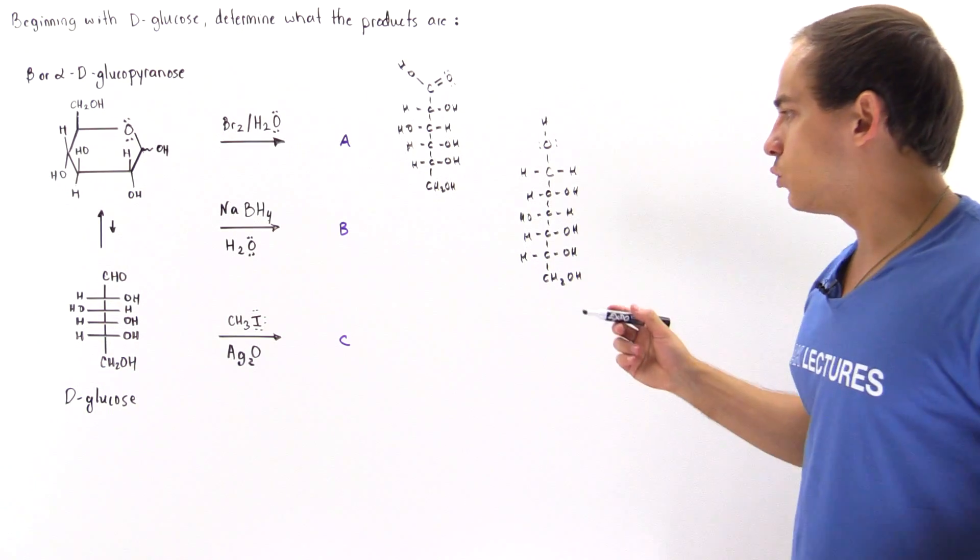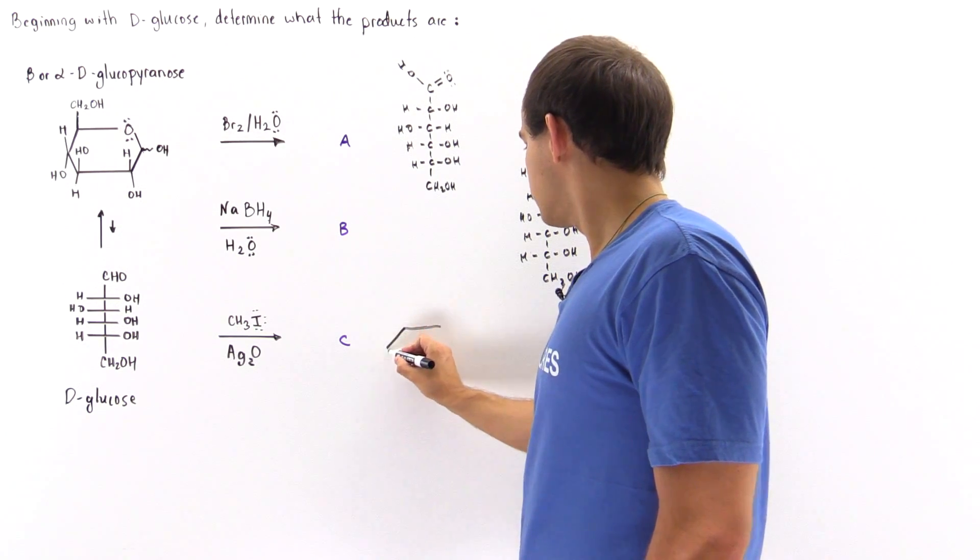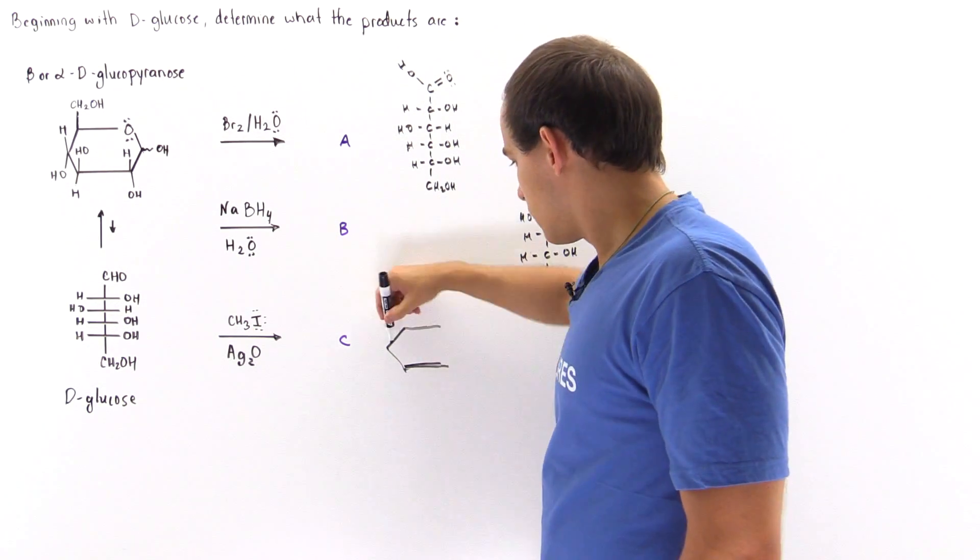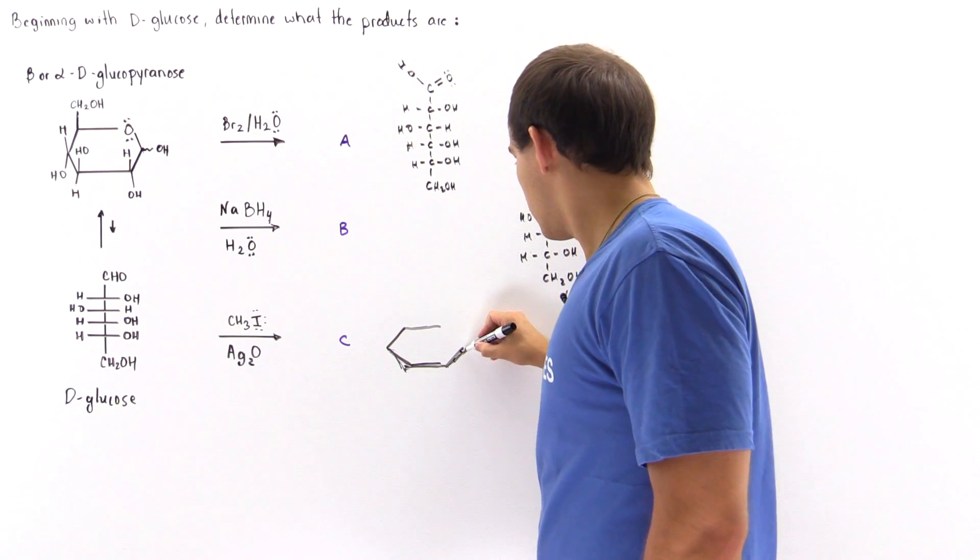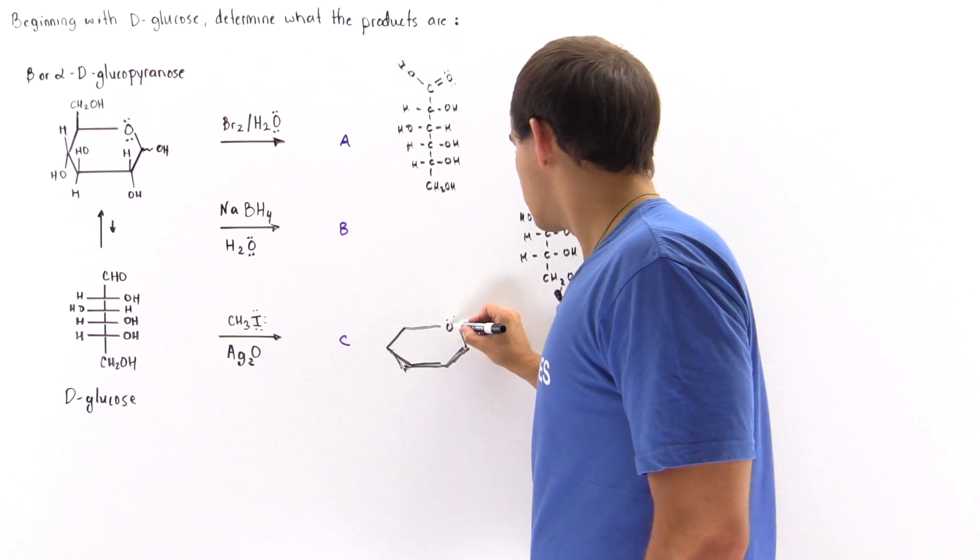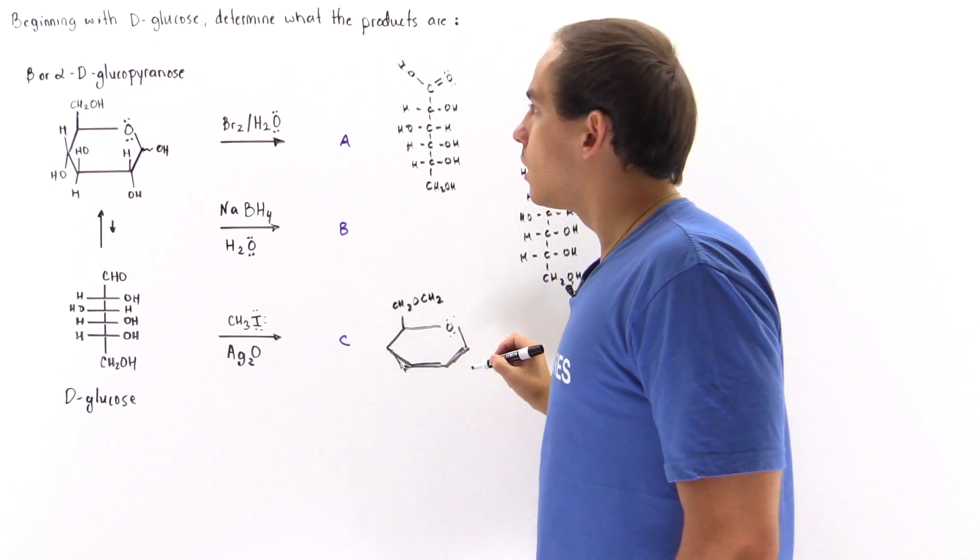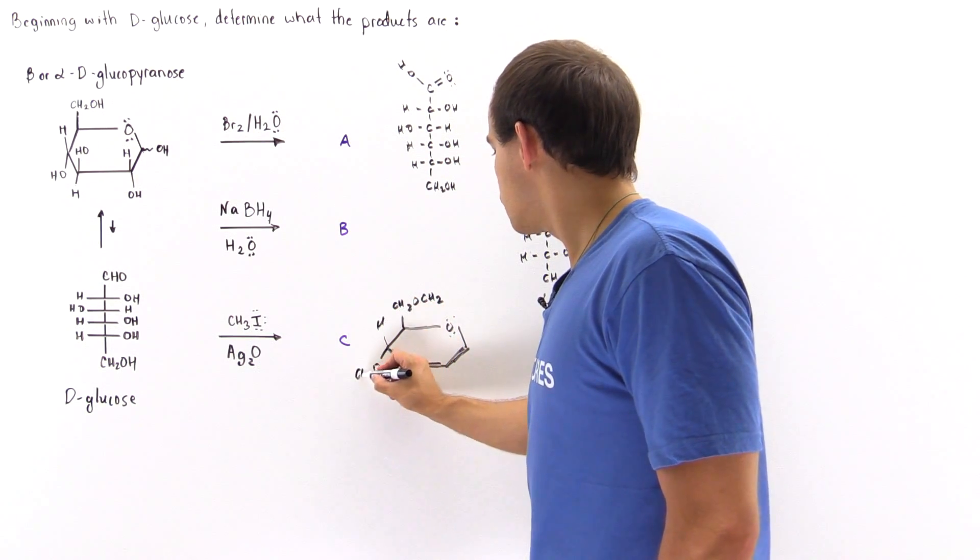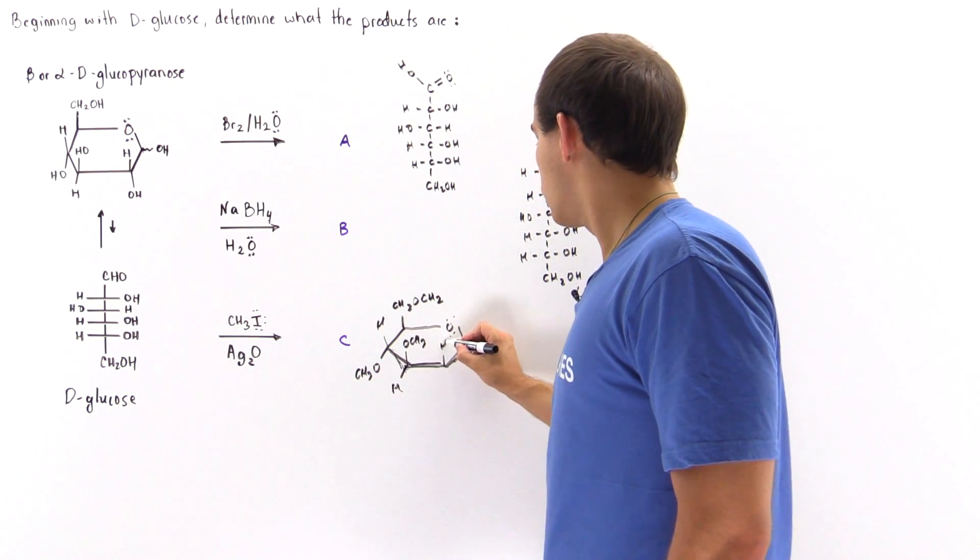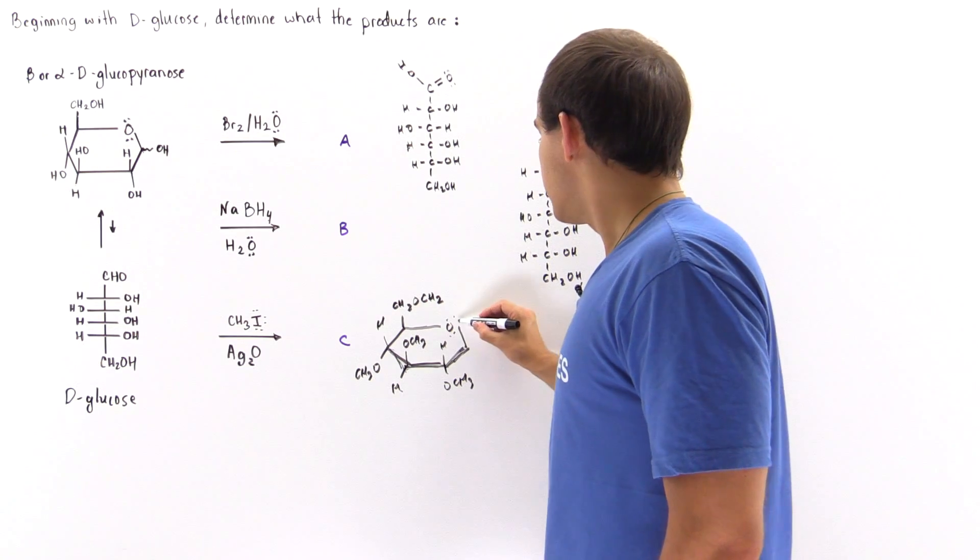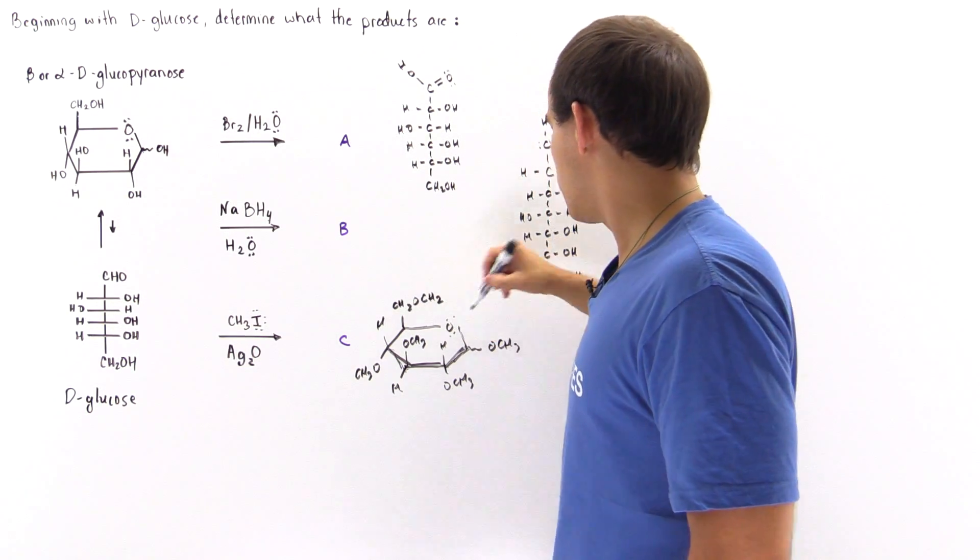So the product will look something like this. Let's draw these as coming out of the board. The oxygen here will basically change to a methyl group, this one will also change. Essentially every single open hydroxyl group on the cyclic ring will change—will be methylated. This oxygen will not change, of course, because it has a bond between this carbon and this carbon.